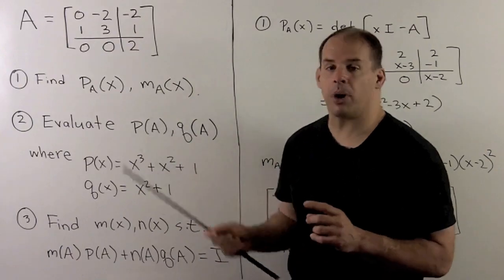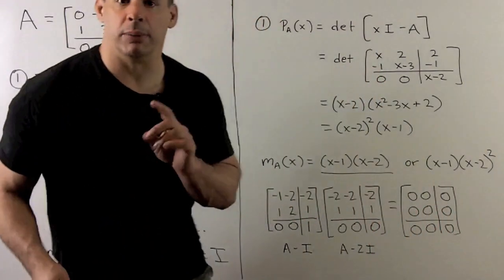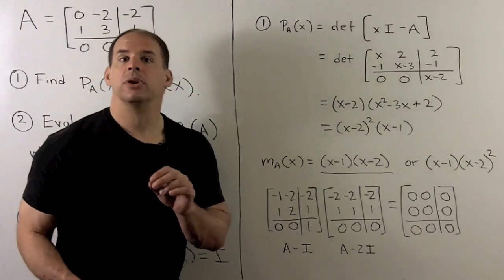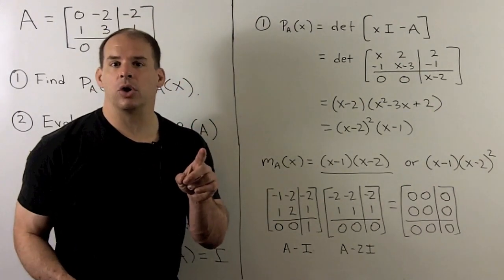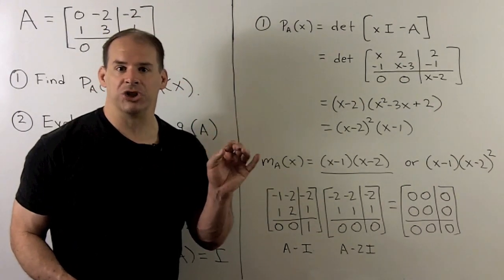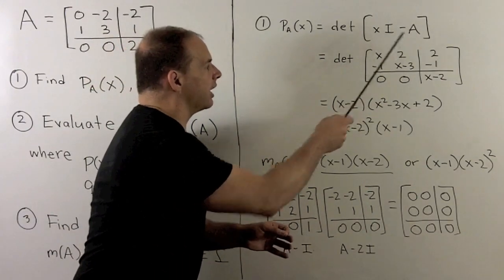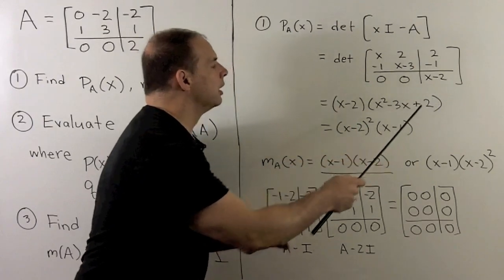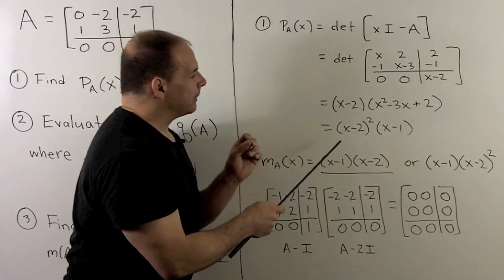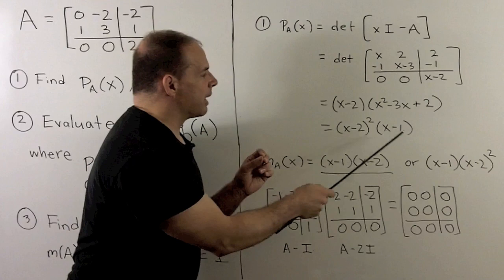For part one, to find the characteristic and minimal polynomials for A, we first find the characteristic polynomial, and that's just writing down the definition and evaluating. So our definition is determinant of XI minus A. We want to take the determinant. We wind up getting X minus 2 squared times X minus 1.